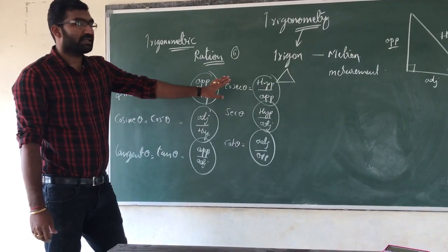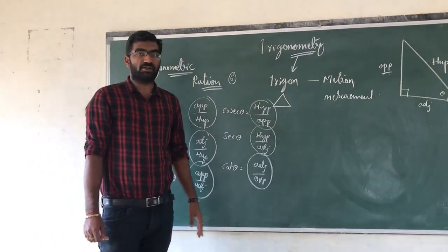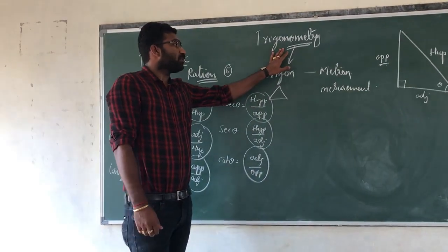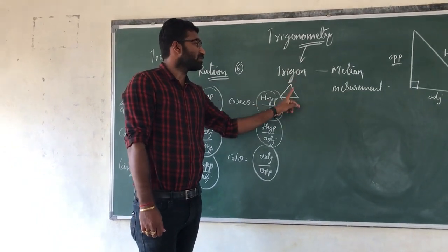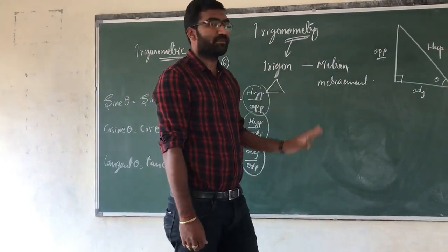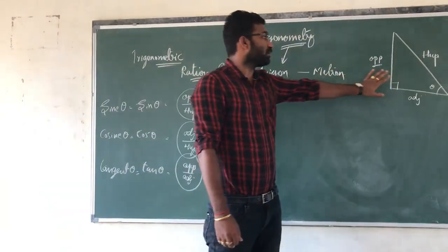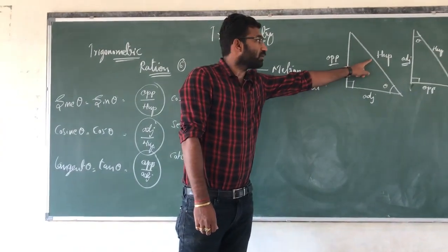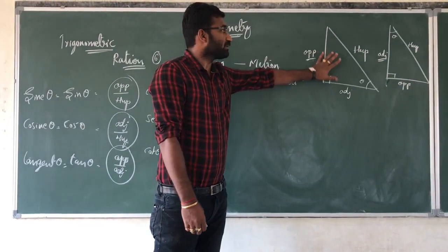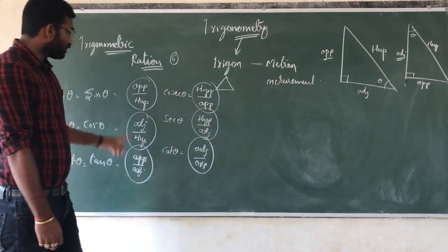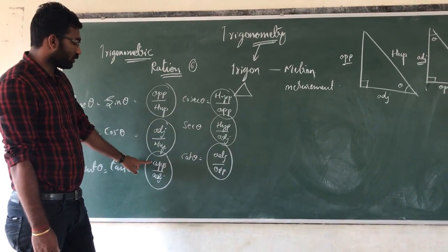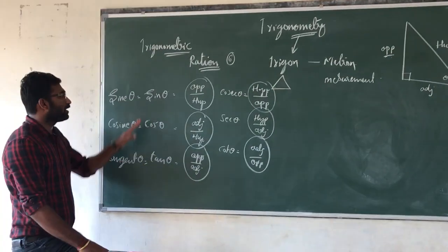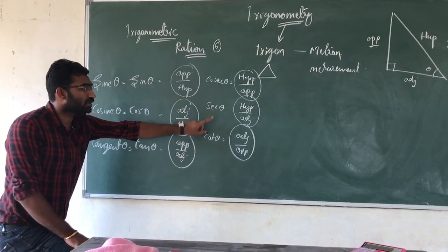In this class we have discussed the six trigonometric ratios and the introduction to Trigonometry. Let us recap: Trigonometry is made up of two words — Trigon and Metron. Trigon means triangle, Metron means measurement. In this chapter we study the right-angle triangle, which has a 90-degree angle, and its three sides: hypotenuse, opposite, and adjacent. The six ratios of these sides are: opposite by hypotenuse, adjacent by hypotenuse, opposite by adjacent, and their reciprocals — giving us sin θ, cos θ, tan θ, cosec θ, sec θ, and cot θ.